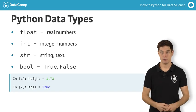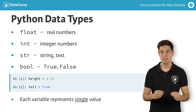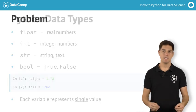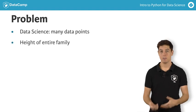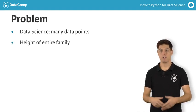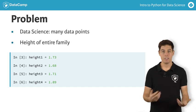You can save these values as a variable, like these examples show. Each variable then represents a single value. As a data scientist, you'll often want to work with many data points. If you, for example, want to measure the height of everybody in your family and store this information in Python, it would be inconvenient to create a new Python variable for each point you collect.